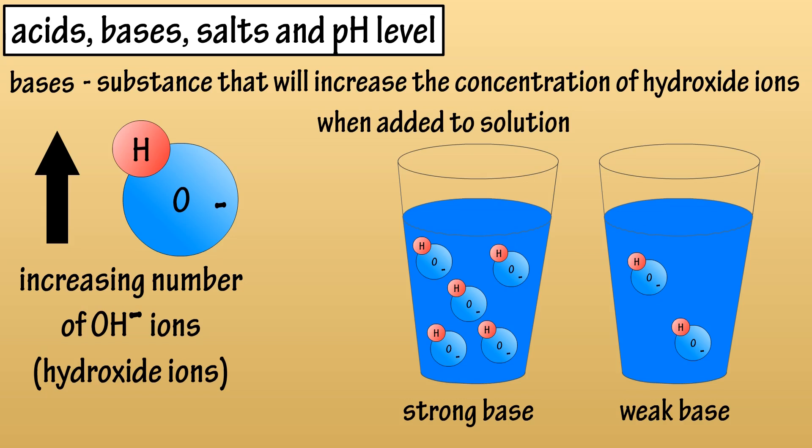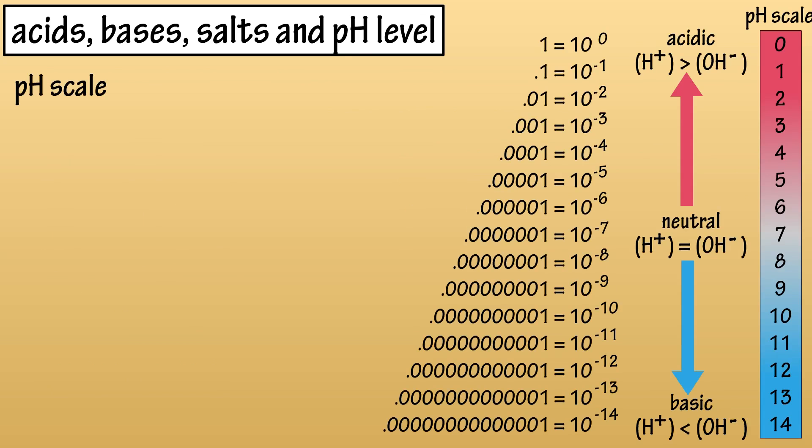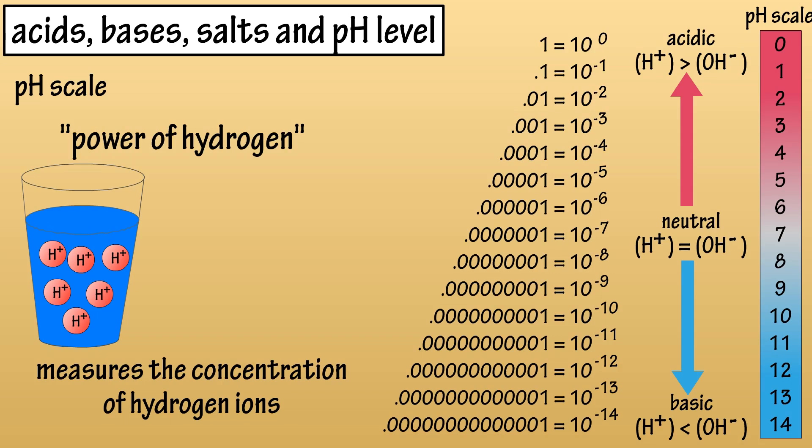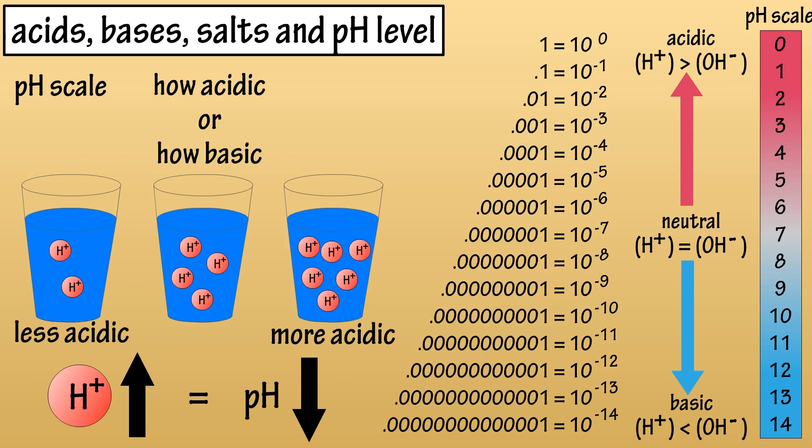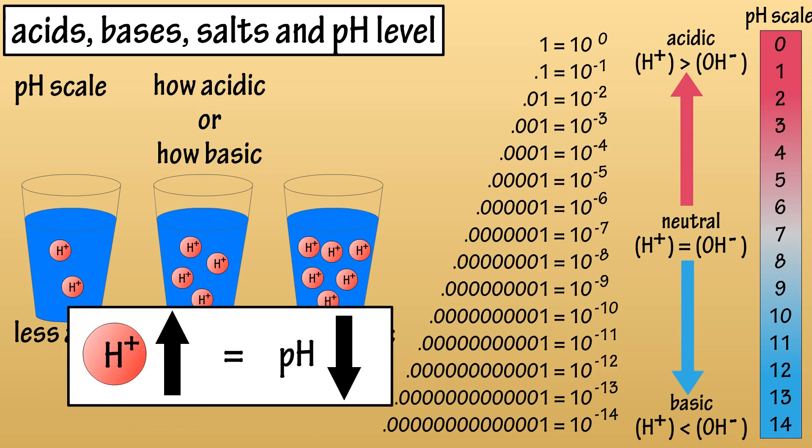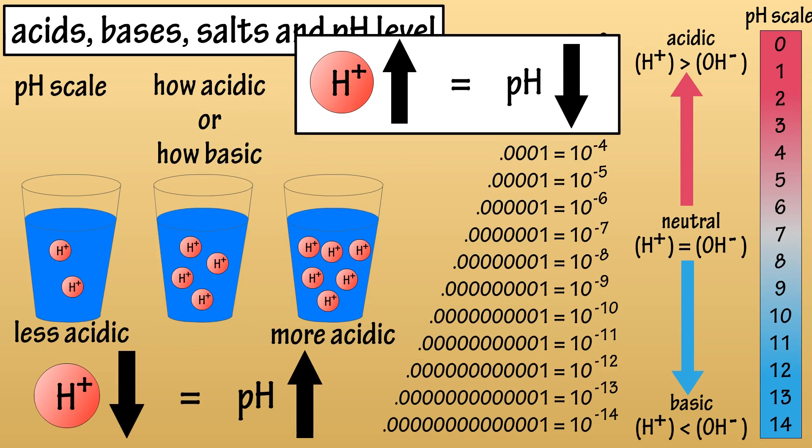This brings us next to the pH scale, which is basically an abbreviation for the phrase power of hydrogen. So, the pH scale measures the concentration of hydrogen ions of a solution, or it measures how acidic or basic a substance is. As the amount of positive hydrogen ions increases, the pH goes down, and the solution becomes more acidic. As the amount of positive hydrogen ions decreases, the pH goes up, and the solution becomes more basic.